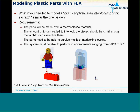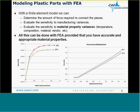Modeling plastic parts with FEA can be challenging. For instance, what if you needed to model this highly sophisticated interlocking brick system shown here? The requirements for this design are that the part will be made from a thermoplastic material, the force needed to interlock the pieces should be small enough that a child can assemble them, the parts need to survive multiple interlocking cycles, and the system must perform in environments ranging from 20 to 35 degrees Celsius. With the finite element model, we can determine the force required to connect the pieces, evaluate the sensitivity to manufacturing variances, and evaluate the sensitivity to material property variances.